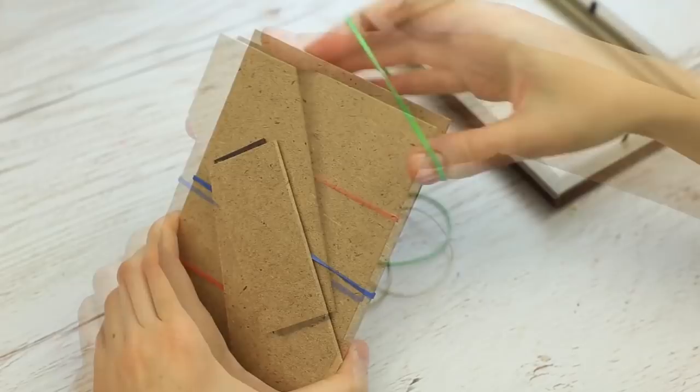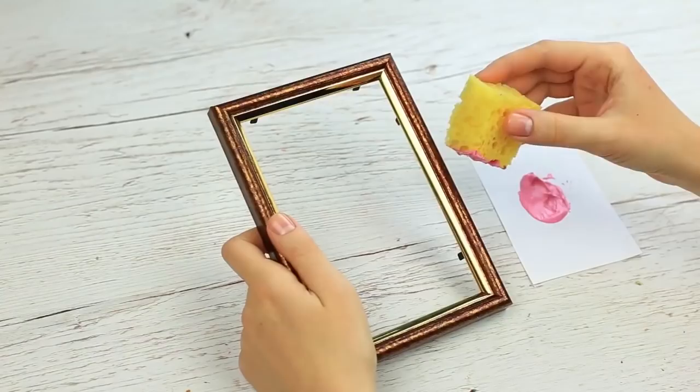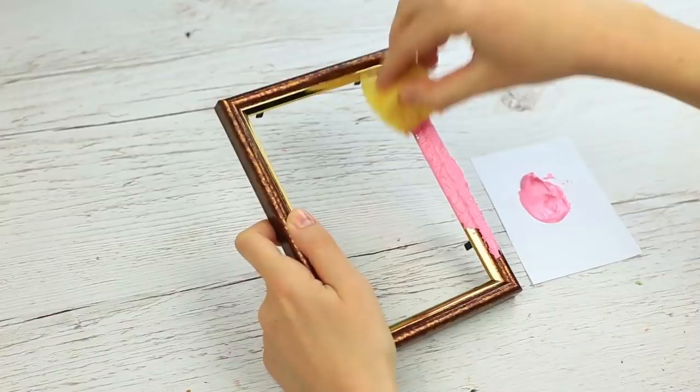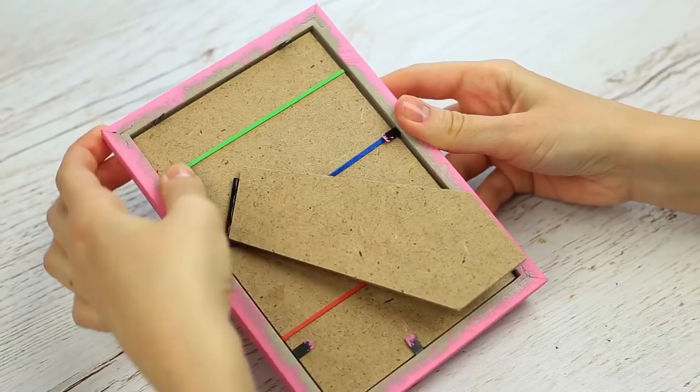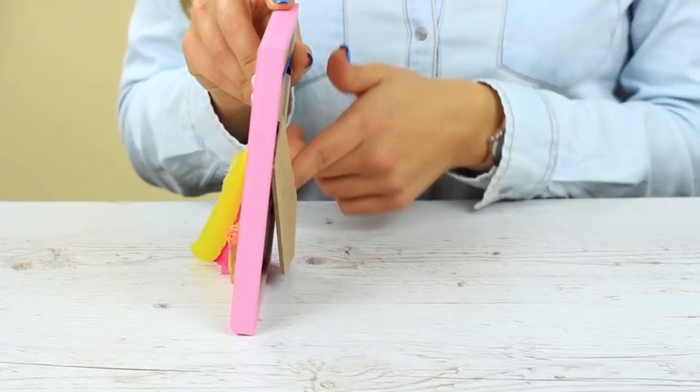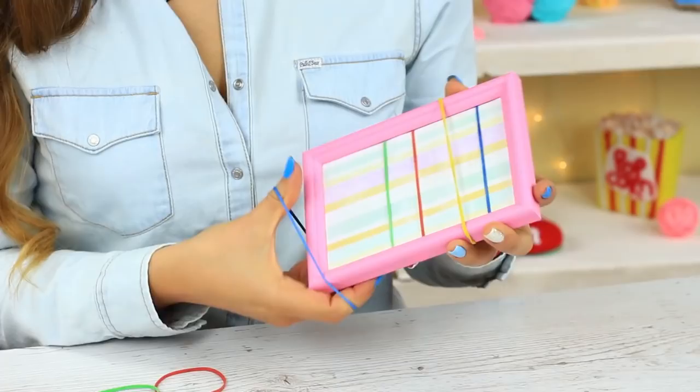You can choose any color to paint the frame. Use the sponge and acrylic paint. Put on the back. Fasten with the clips. You can use the paper of any color or pattern for the background. Now your earrings and chains will be kept safe.